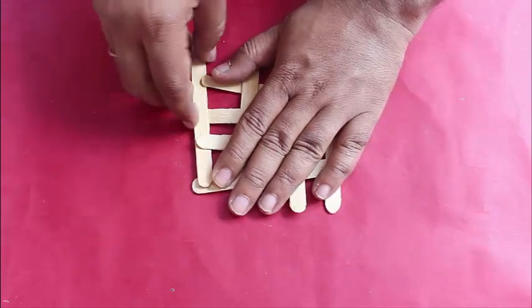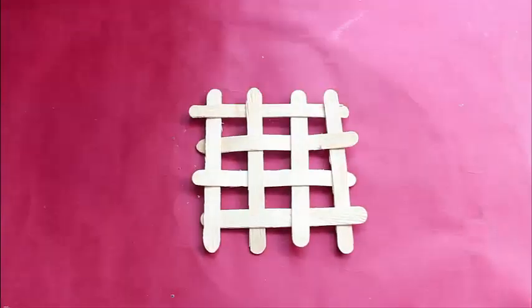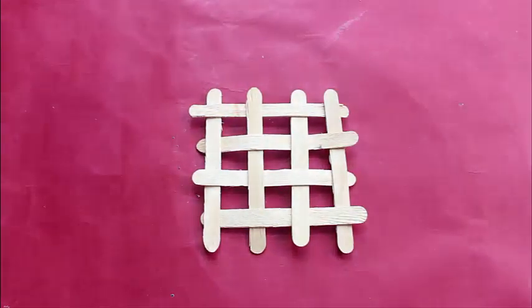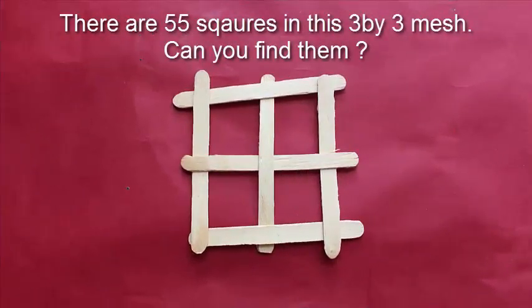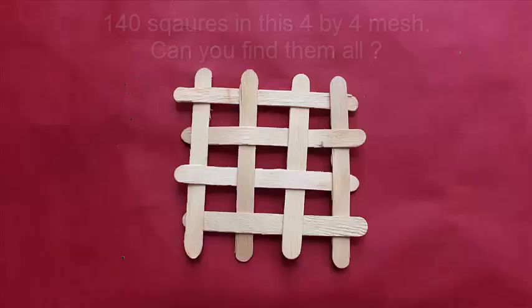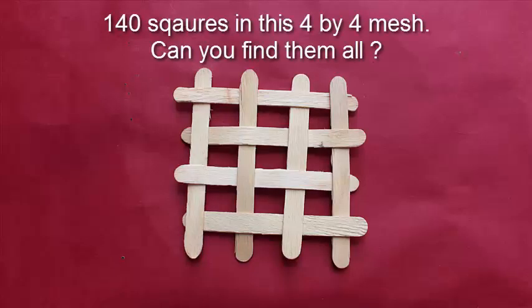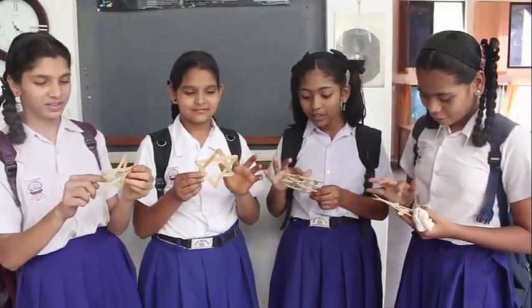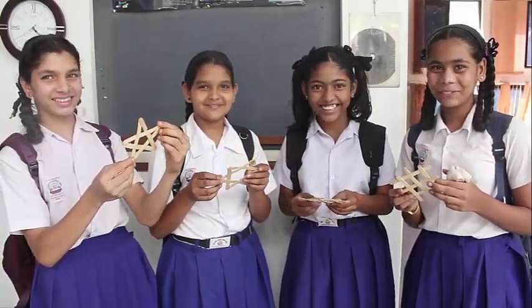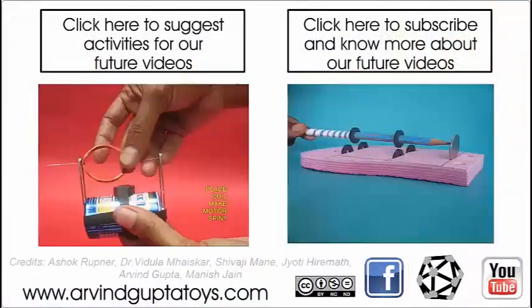And an offshoot to this amazing activity is to find the number of squares in this 3x3 and 4x4 mesh. And it is astonishing that there are actually 55 and 140 different squares that you can find in this mesh. To see how we can find 55 and 140, please see our next video. Thank you.